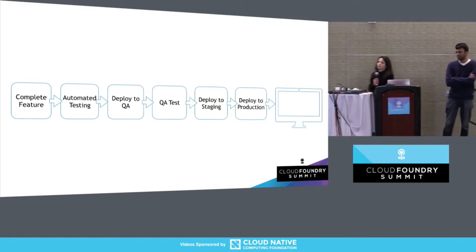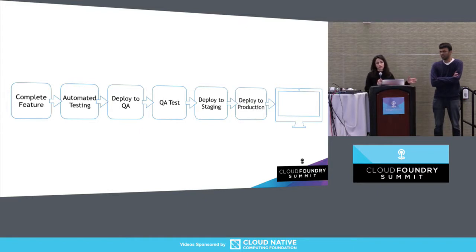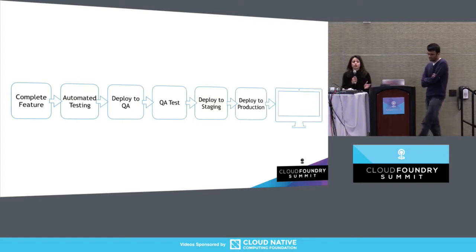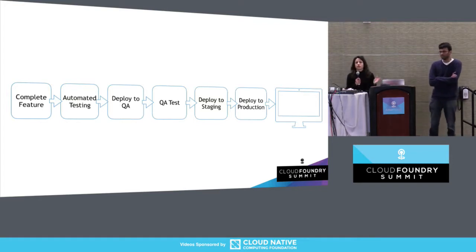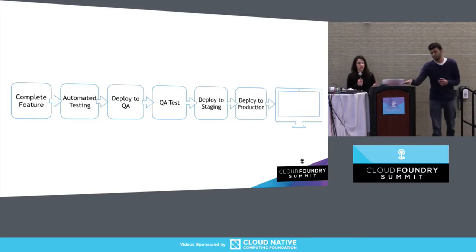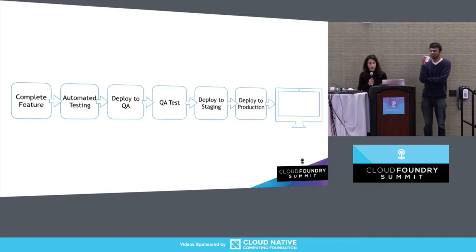Let's look at a simple website example and the flow it follows to go from feature work that a developer does onto a production system. At the beginning of time, an operator sets up a bunch of environments — your production environments, some staging and some testing environments. At the same time, developers would have their own development stations and environments to do their work on.